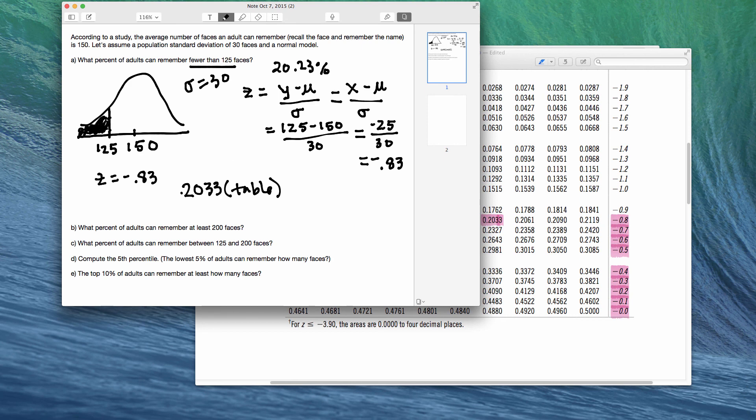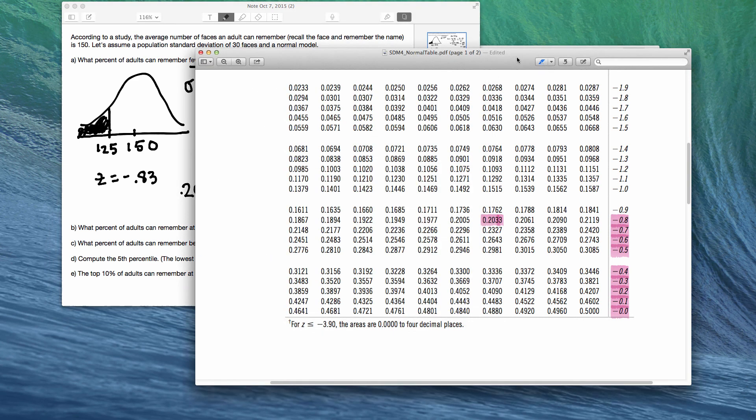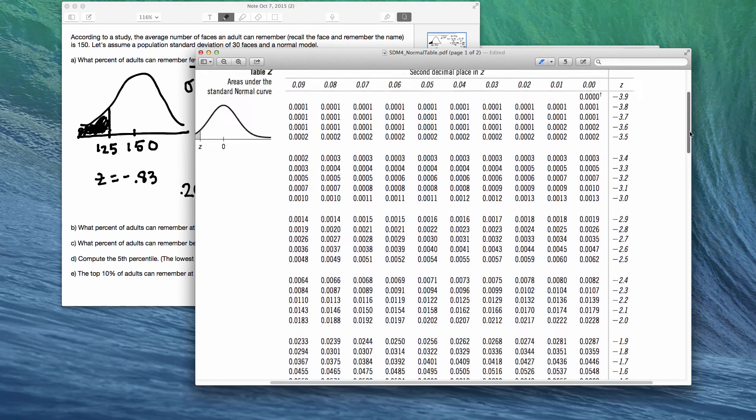So this is one basic question of finding area to the left, to the left of a number. And that's just one of the basic ones, type of questions that you'll be asked to do. It's pretty direct using the book here because the table in the back of the book finds area to the left directly.